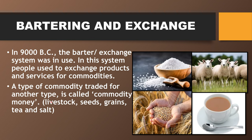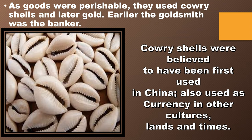Examples of commodity money include livestock, seeds, grains, tea, and salt. But later, when people realized that goods are perishable — meaning they are not durable and cannot be stored for a longer time — they used cowrie shells and later gold as money. Earlier, the goldsmith was the banker.